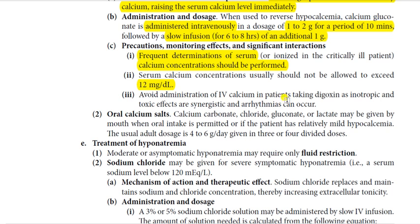Avoid administration of IV calcium in patients taking digoxin. When calcium and digoxin are given together, digoxin toxicity occurs because their ionotropic and toxic effects are synergistic, leading to cardiac arrhythmia. If a CHF patient requires calcium salt and is also on digoxin, the digoxin dose must be reduced. Otherwise, the synergistic effect causes digitalis toxicity and cardiac arrhythmia.